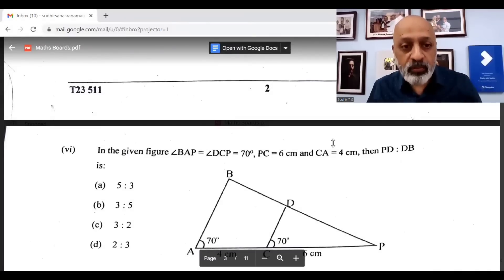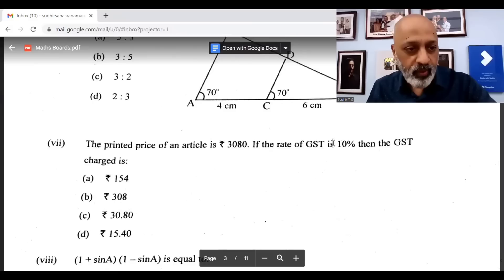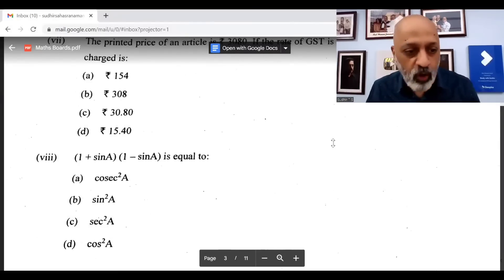The sixth question, the correct option is C: 3 is to 2. The seventh question, which is from the GST chapter, the correct option is B: 308 rupees.